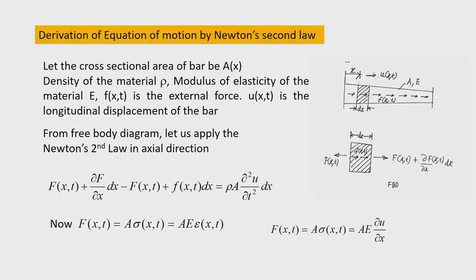Now let us see the equation of motion of the axial vibration of bar. The bar is shown here — it may have a uniform cross section or may be of varying cross section. In general, the cross section is a function of x. The density of the material is taken as rho (mass density) and the modulus of elasticity of the material is taken as E (Young's modulus). The distance x is measured from the reference section.